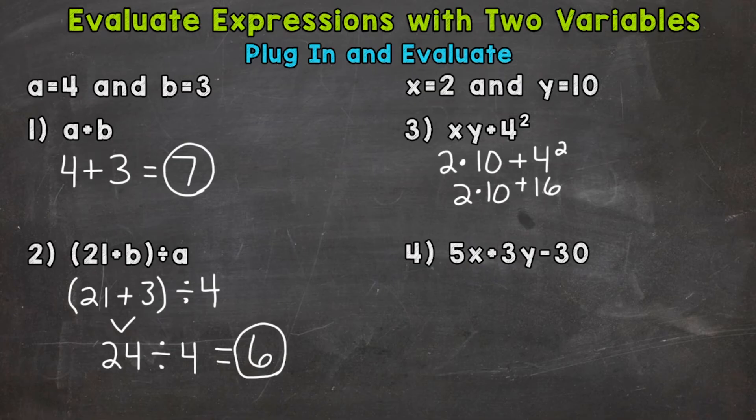So we have multiplication and addition. Any parentheses? No. Any exponents? No. Any multiplication or division? Yes. So that's what we do next. We have 2 times 10, which is 20. Bring down our addition and the 16, and that's where we end. So 20 plus 16 equals 36.